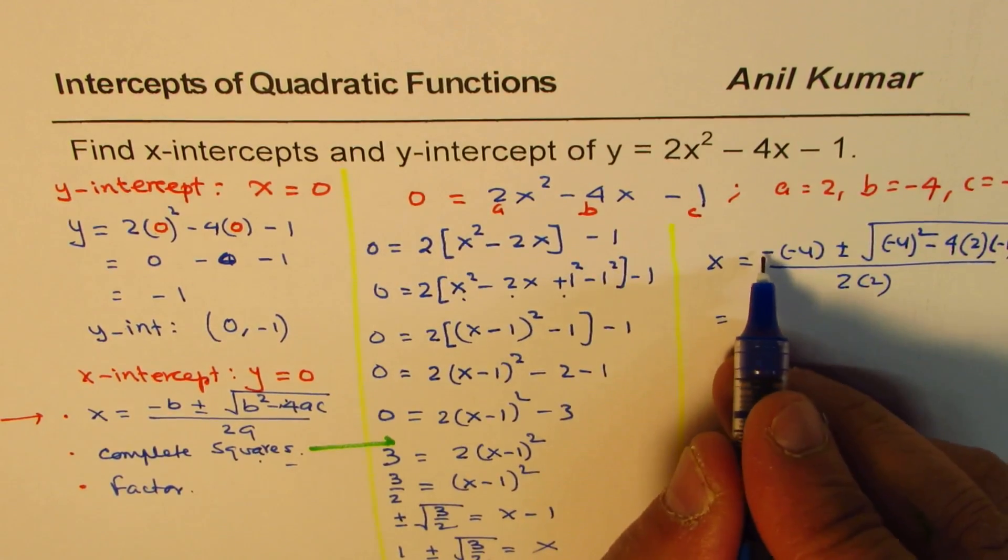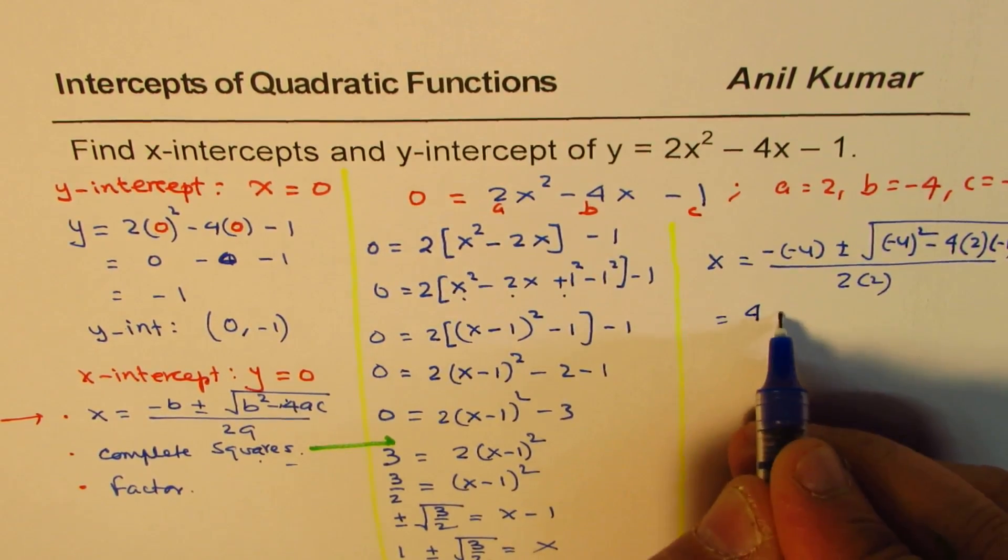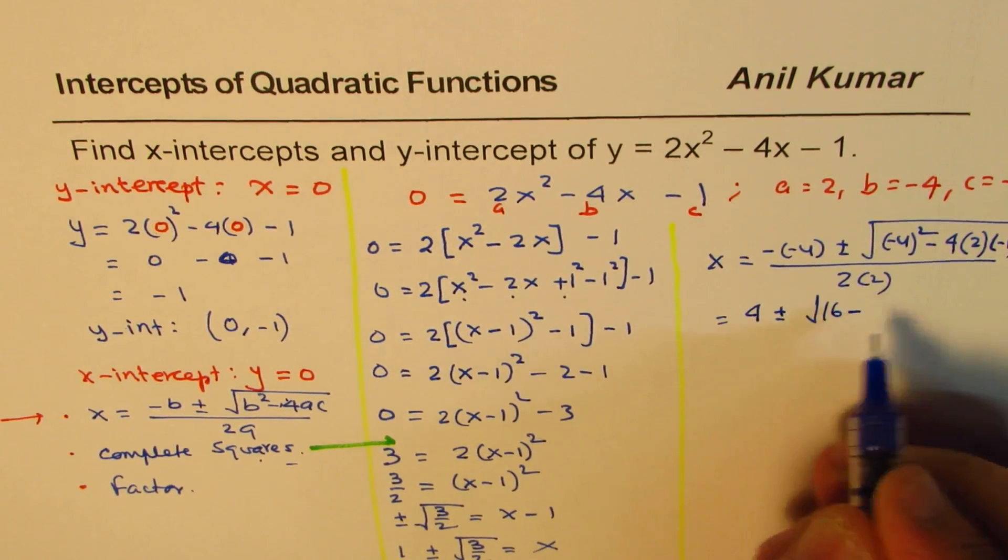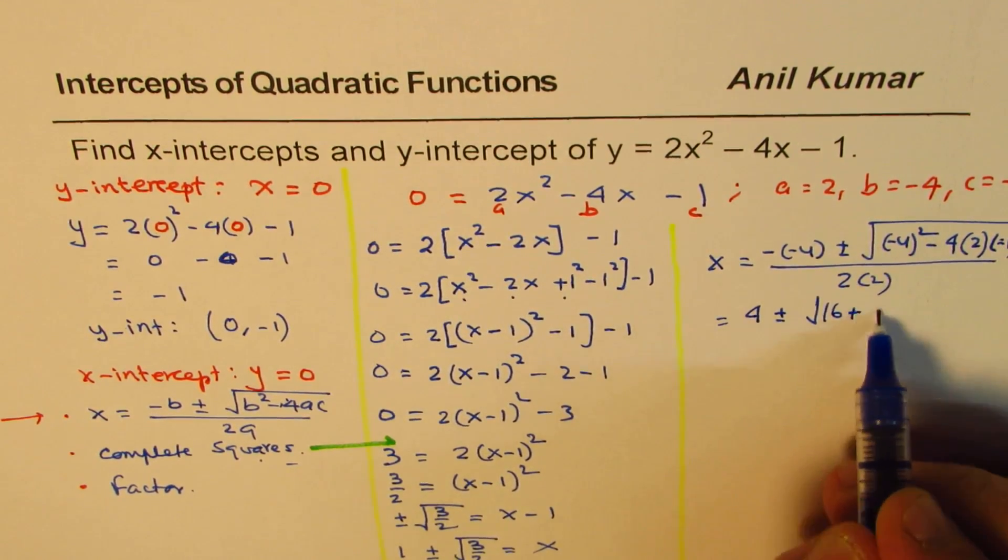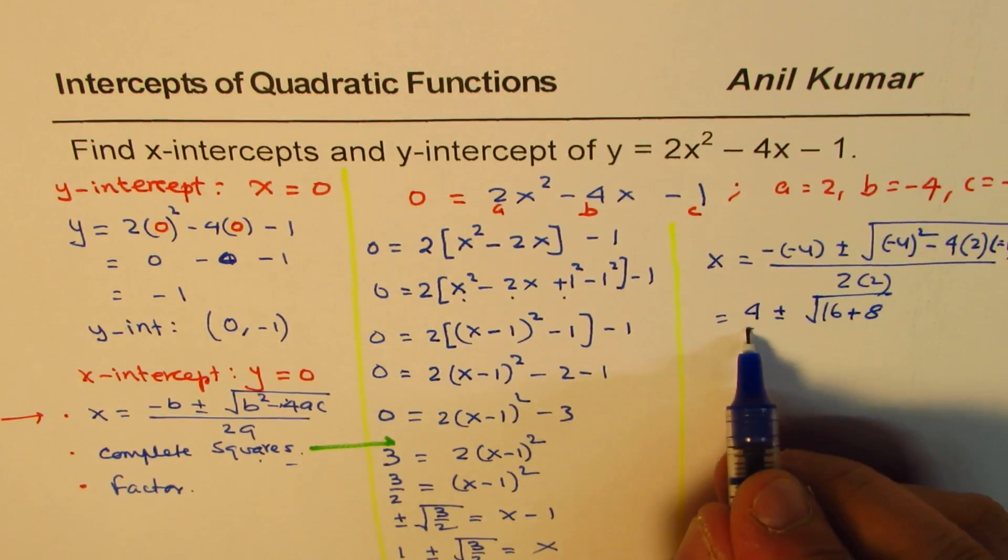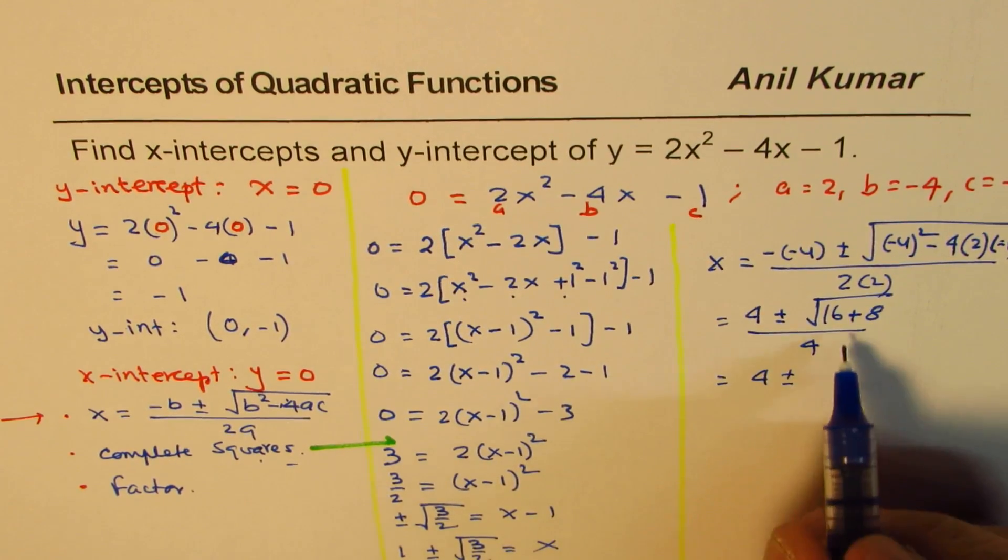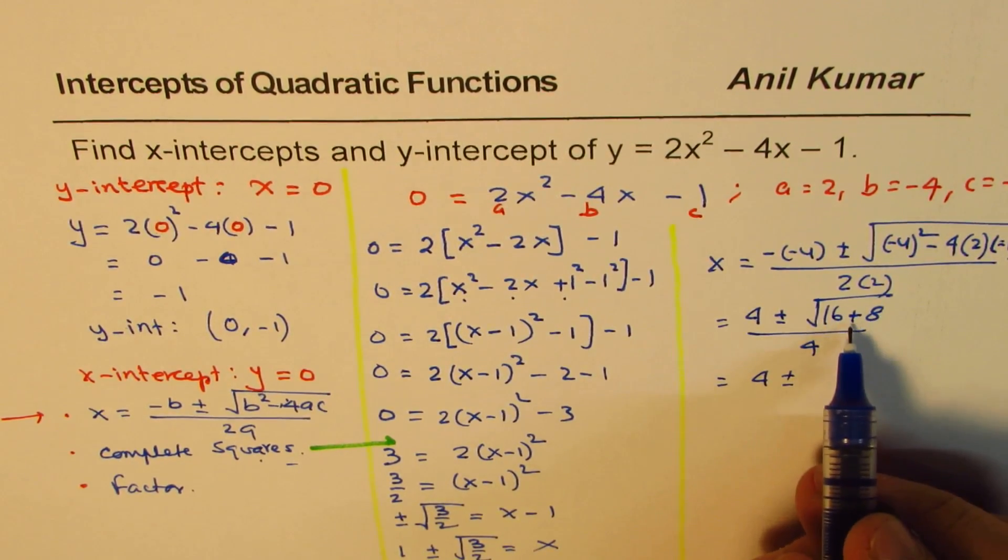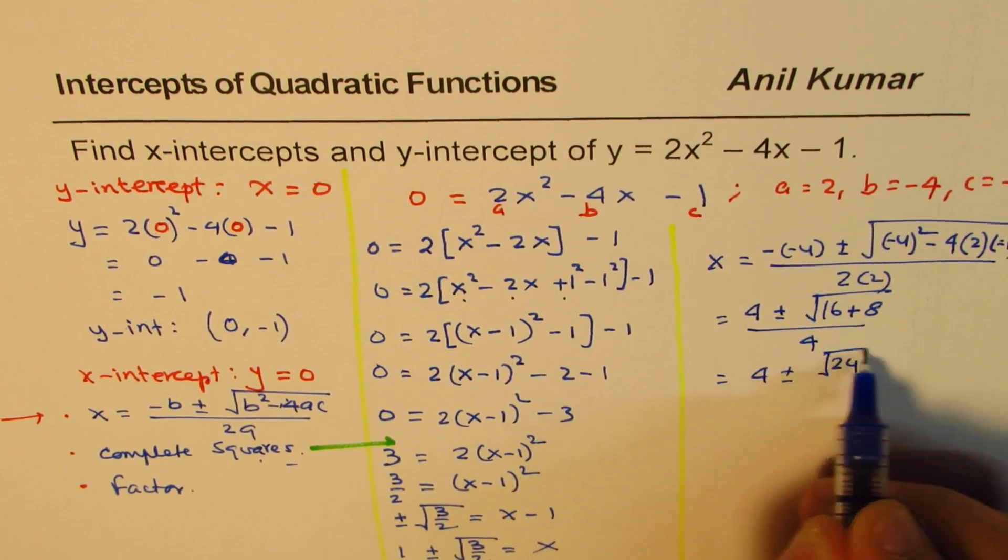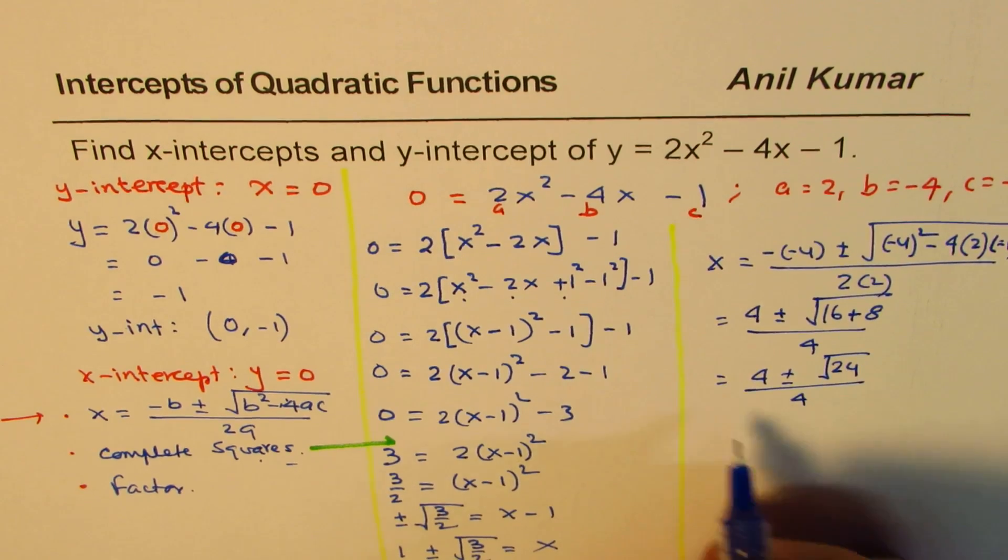So here what we have is minus minus plus plus minus square root of 16, minus and minus becomes plus 8 square root divided by 4. So that is 4 plus minus. Now 8 plus 16 is 24. So we get 24 over 4.